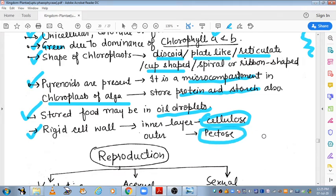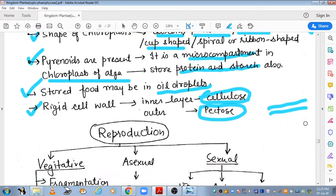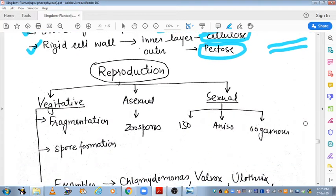If we call cellulose layer, it is a cell wall. The cell wall is composed of cellulose. Next, let's talk about reproduction in Chlorophyceae.